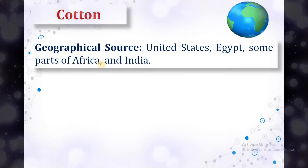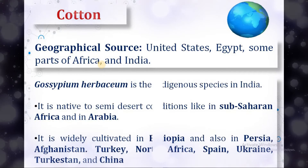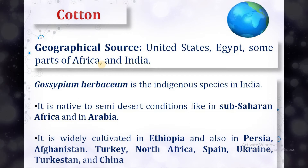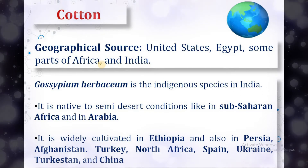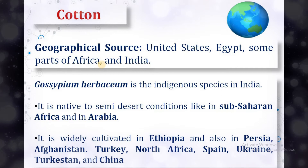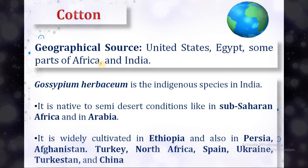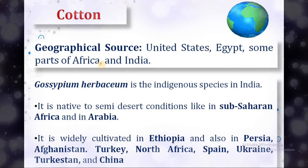Cotton is mainly cultivated in the United States, Egypt, and some parts of Africa and India. Gossypium herbaceae is the indigenous species in India. It is native to semi-desert conditions like sub-Saharan Africa and Arabia. It is widely cultivated in Ethiopia, Persia, Afghanistan, and Turkey.